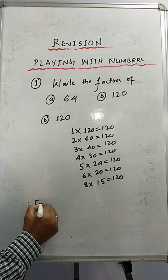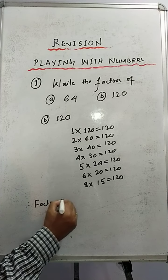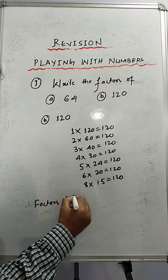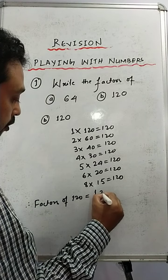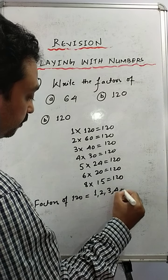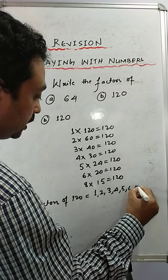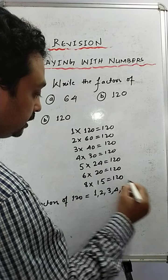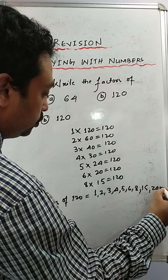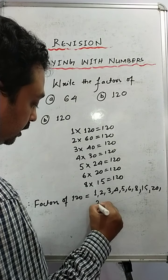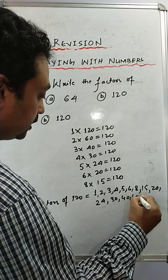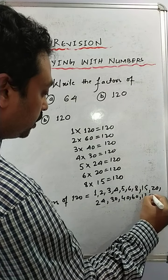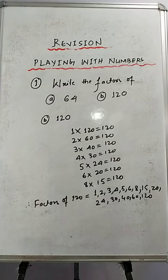Therefore, factors of 120 equals: 1, 2, 3, 4, 5, 6, 8, 15, 20, 24, 30, 40, 60, and 120. My God, so many factors! Now let's move on to the second sum.